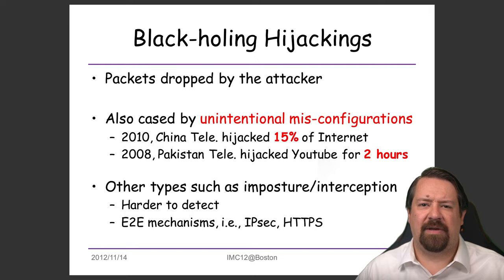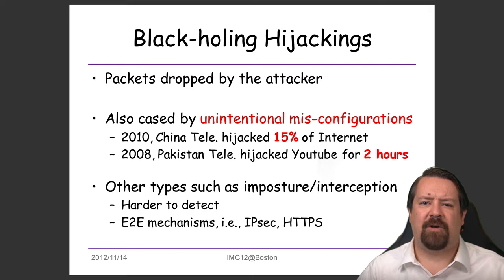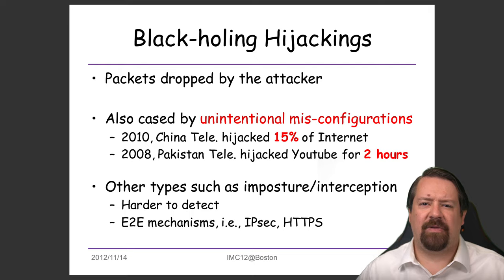A couple of noteworthy events have been China Telecom hijacking 15% of the internet, and in 2008, Pakistan Telecom hijacking YouTube for a couple of hours. These hijackings are relatively obvious because connectivity to the prefix simply breaks — the traffic is black-holed. However, if the attacker is more sophisticated and able to pretend to be the destination — such as PayPal or a bank website — the user may be fooled, or traffic could be intercepted in a man-in-the-middle attack before forwarding to the real destination. Both of these motivate the need for end-to-end security such as HTTPS.